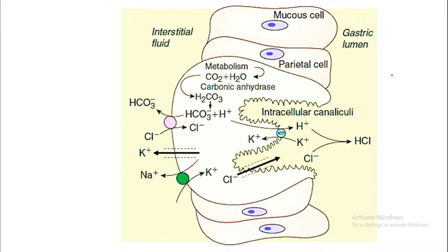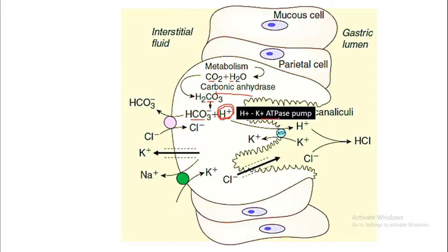This is the parietal cell. The mechanism behind HCl secretion: two simple molecules, CO2 and H2O, combine to form H2CO3 with the enzyme carbonic anhydrase. This H2CO3 dissociates into H+ and HCO3−. The H+ ion goes inside the lumen of the stomach via the H+/K+ ATPase pump.